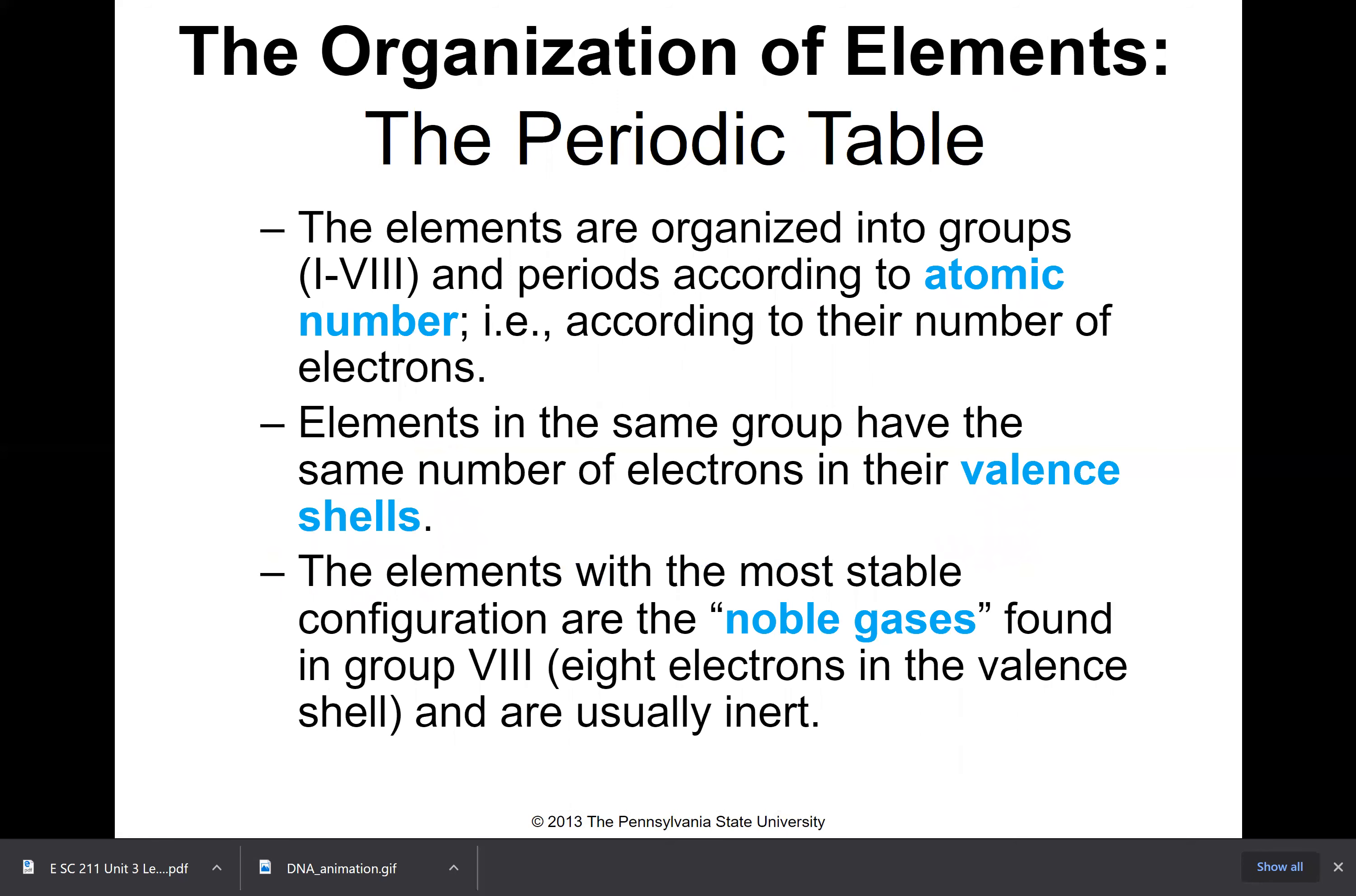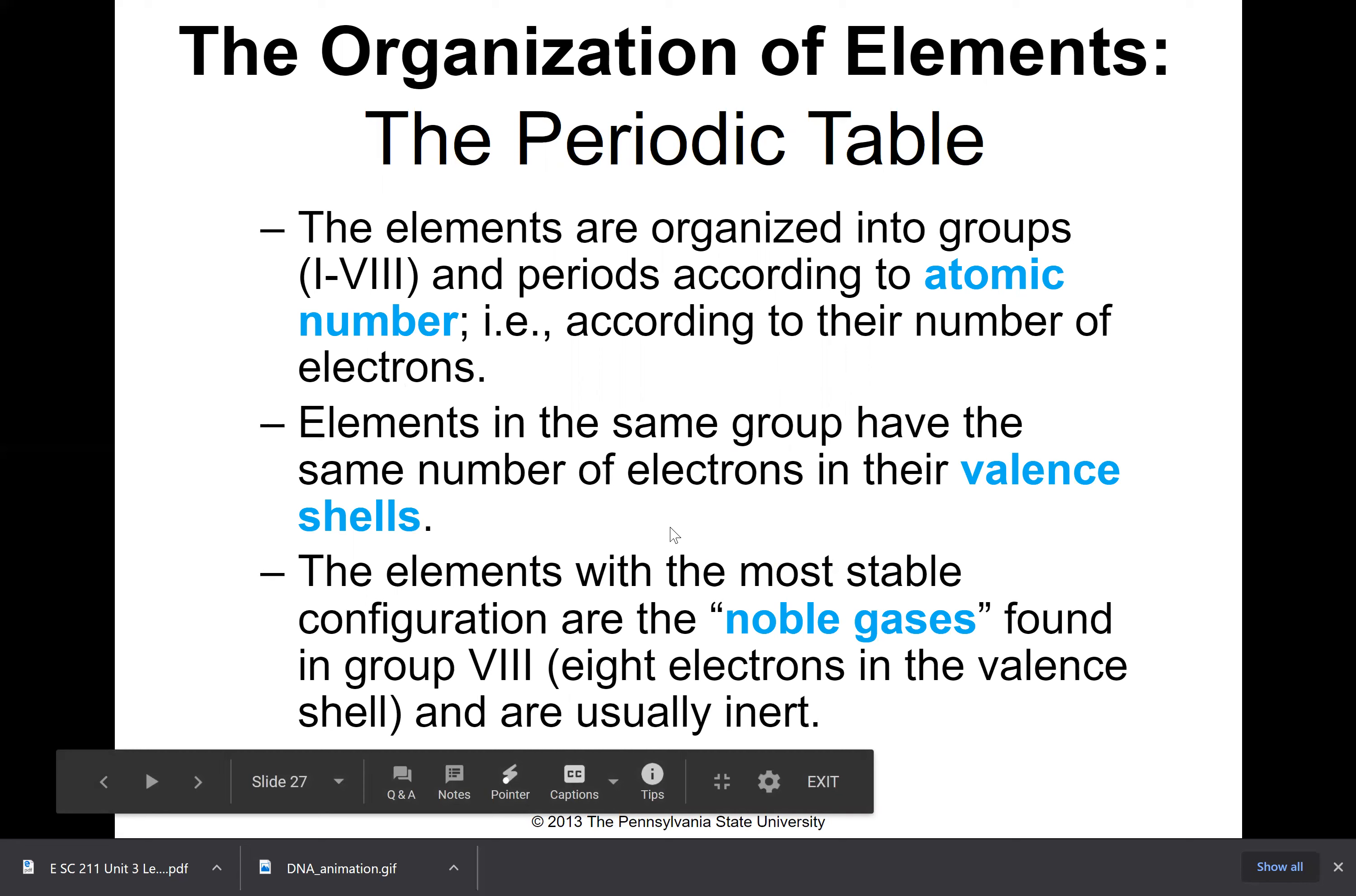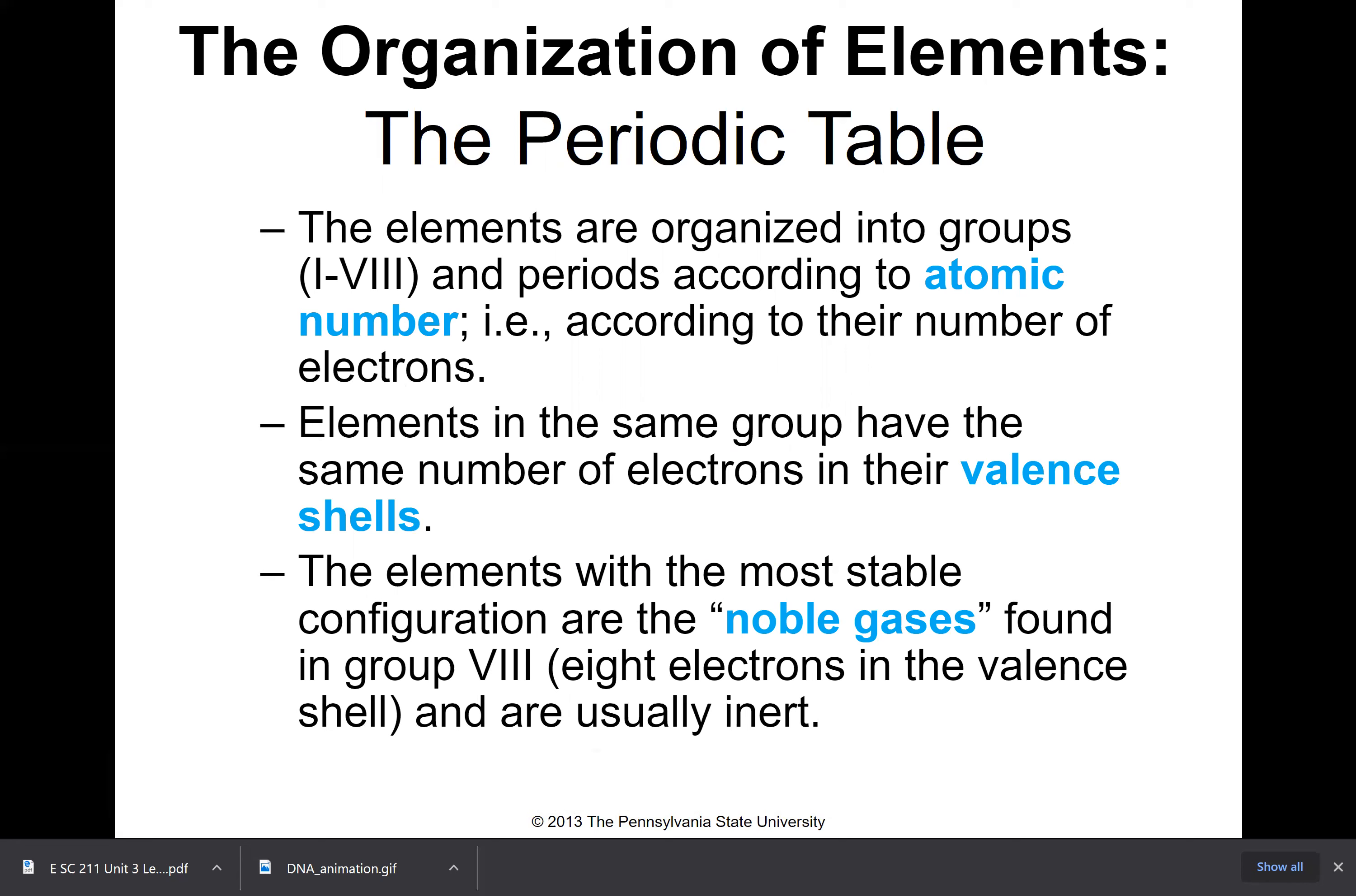For chemistry students, we're going to be getting into this very soon—the organization of the elements on the periodic table. The elements are organized into groups I through VIII, so one through eight using Roman numerals. This is an older system of grouping and I was going to change it but I decided to leave it. The elements are organized into groups and periods according to atomic number, that is according to their number of electrons or protons. Elements of the same group have the same number of electrons in their valence shells. This is primarily why I wanted to leave that system there. The elements with the most stable configuration are the noble gases found in group eight with eight electrons in the valence shell, and are usually inert. They don't react very well at all.